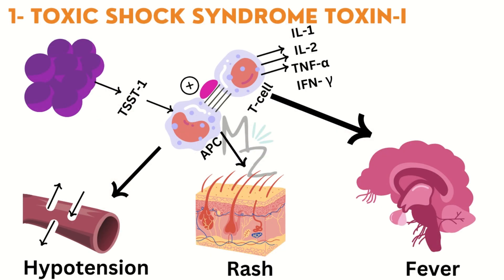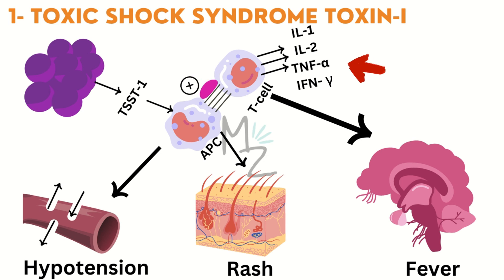The first exotoxin released by Staphylococcus aureus is Toxic Shock Syndrome Toxin type 1 (TSST-1). When S. aureus enters the human body, it releases this toxin, which binds to the connection between antigen-presenting cells and T-cells having MHC class II complexes. It acts as a superantigen, massively stimulating the immune response and causing a huge release of cytokines like interleukin-1, interleukin-2, tumor necrosis factor alpha, and interferon gamma.